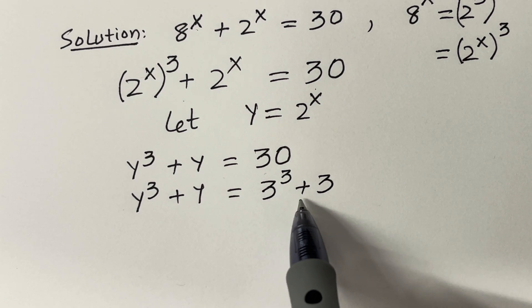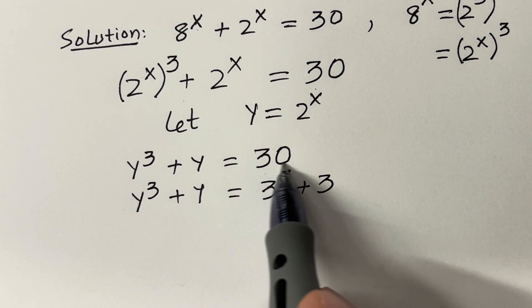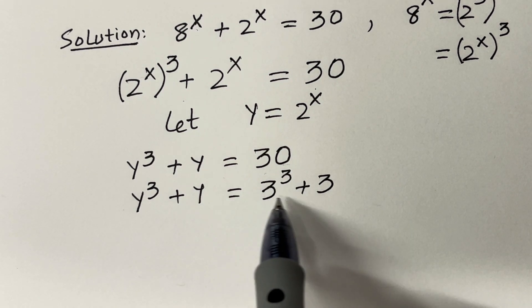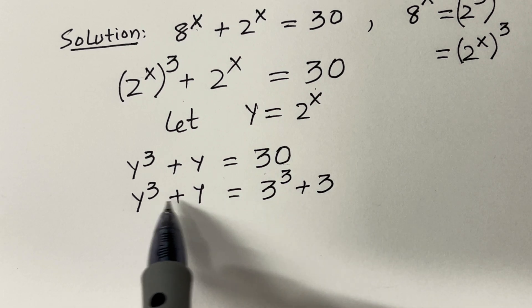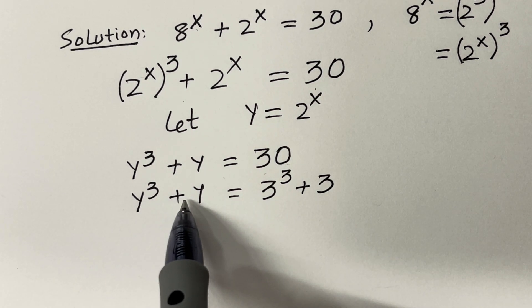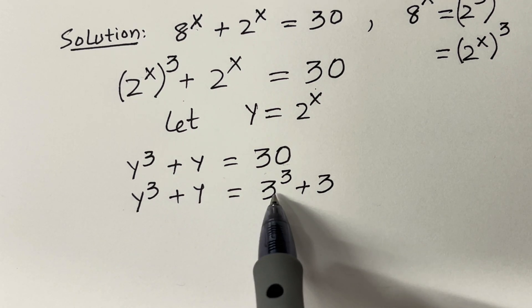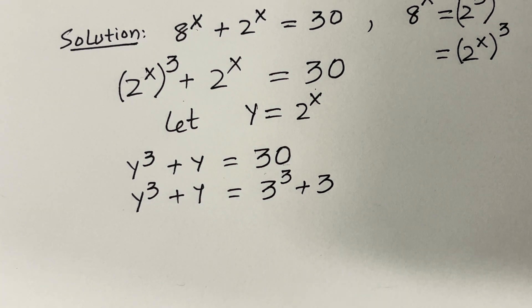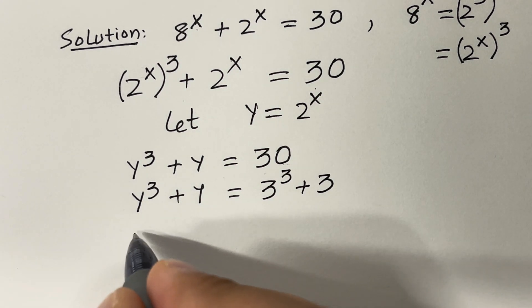I have not done anything — I'm just writing 30 in a slightly nicer way, because if you look here we have y cubed plus y, so this can be written as y cubed plus y equals 3 cubed plus 3.